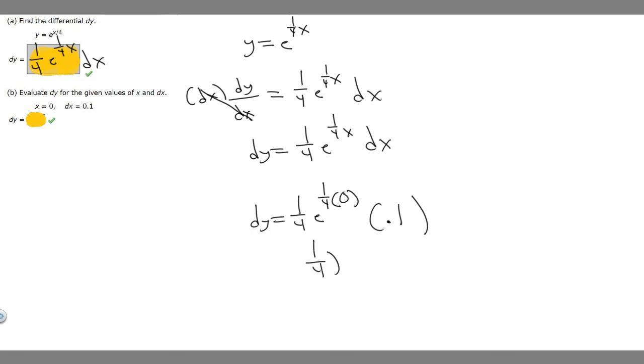Basically, we just got 1 over 4 times 0.1. So if you multiply this, you'll get that equals 0.025. So this right here is going to be your answer to b. So that's how you solve this problem.